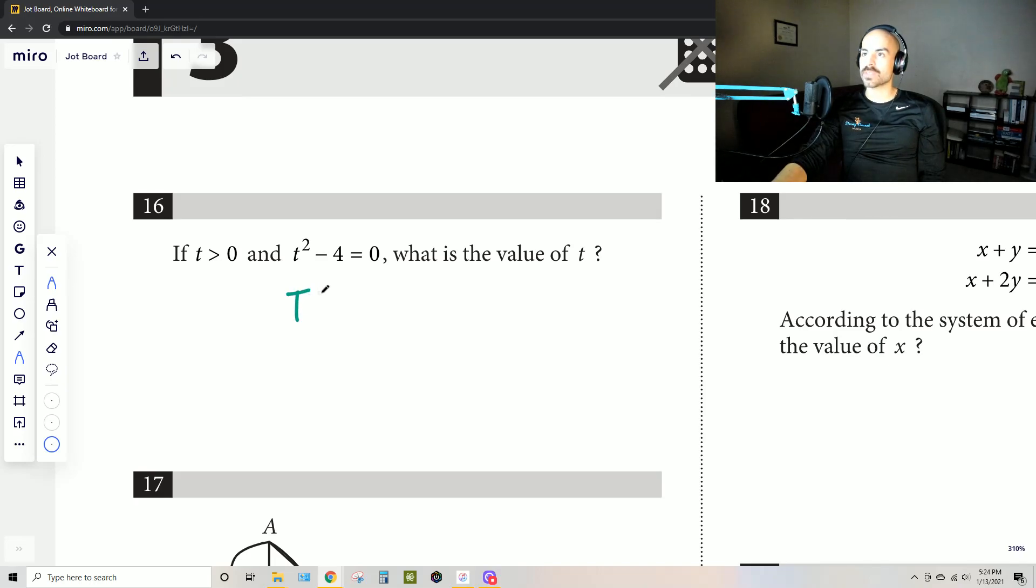So I can rewrite this as t squared equals 4 because I can just get 4 to the other side by adding it, and then I get t by itself by squaring both sides, and then t equals the square root of 4, which is 2.